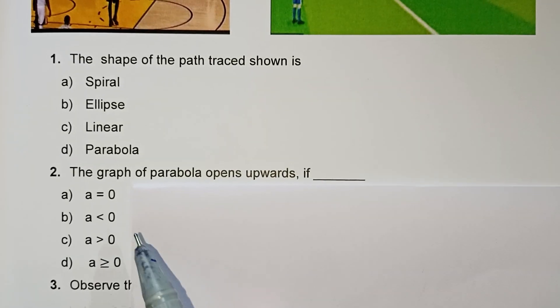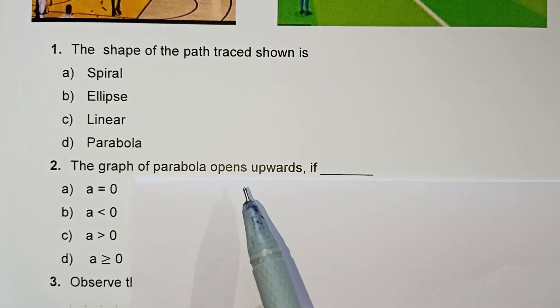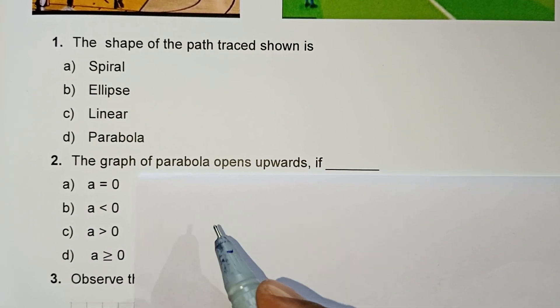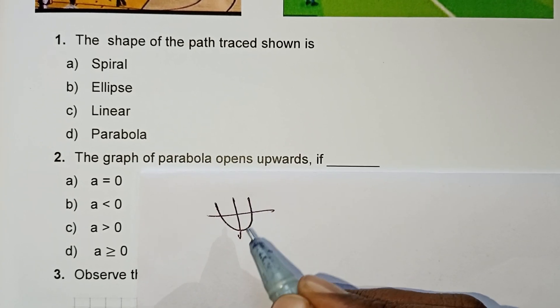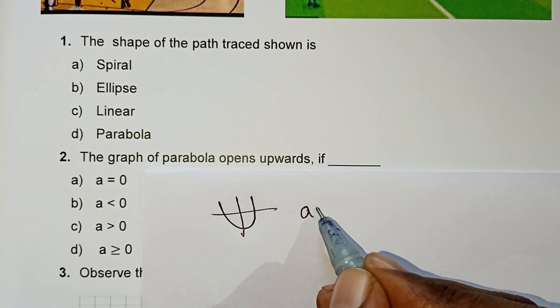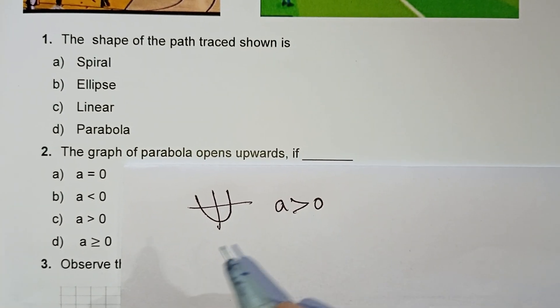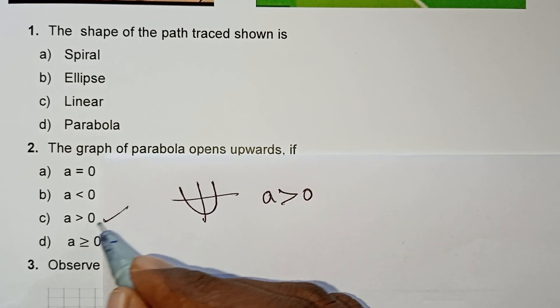The graph of the parabola opens upwards if the condition is a greater than 0. When a is greater than 0, the parabola opens upwards, and the correct answer is the C option.